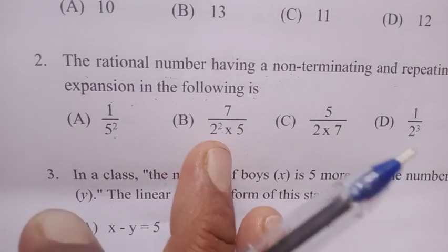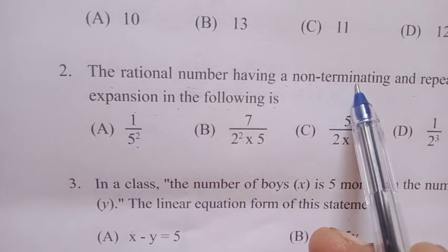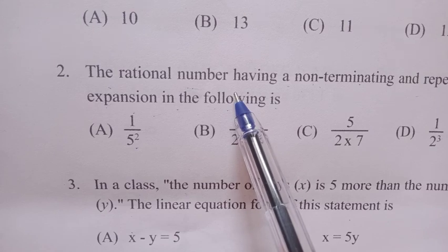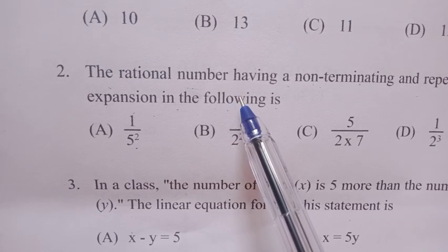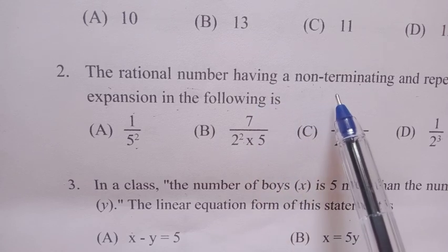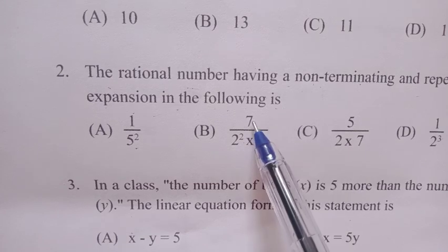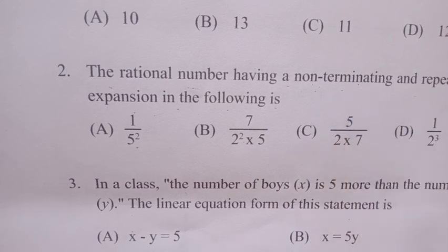First, when you divide a number, if the remainder becomes zero, it is terminating. If the remainder doesn't become zero, your decimal or fraction or rational number is non-terminating.